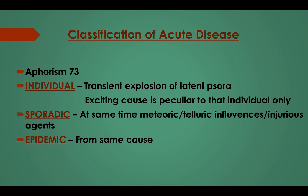Classification of acute diseases in Aphorism 73. Acute diseases are classified into individual, sporadic, and epidemic. Individual disease is a transient explosion of latent psora; the exciting cause is peculiar to that individual only. Sporadic disease involves miasmatic or telluric influences. Epidemic disease arises from the same cause affecting many.